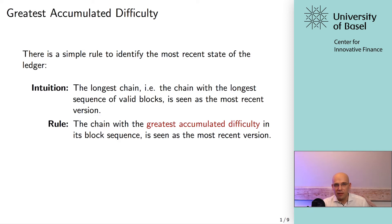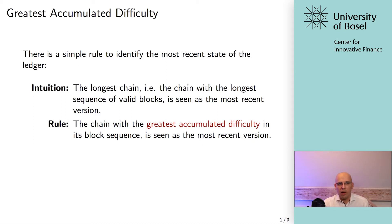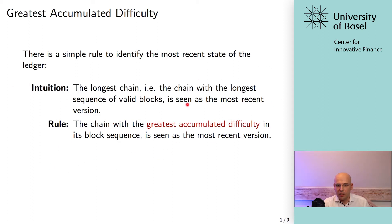The actual rule is: you take the block sequence and aggregate the difficulty values — the inverse of the threshold value as a proxy for the work spent to create these blocks, on average, since it's a probabilistic process. The blockchain version with the highest accumulated difficulty is regarded as the most recent version. In most cases it doesn't matter which rule you use, since difficulty values are only adjusted every 2016 blocks. But there are edge cases when it actually matters, and it's really important that the actual rule is greatest accumulated difficulty, not longest chain.